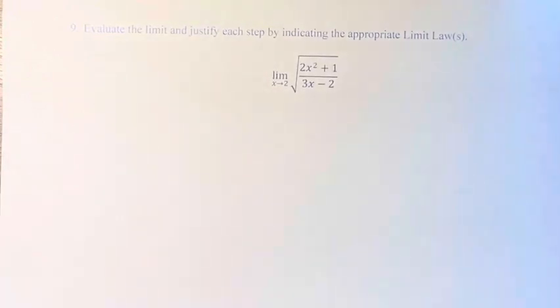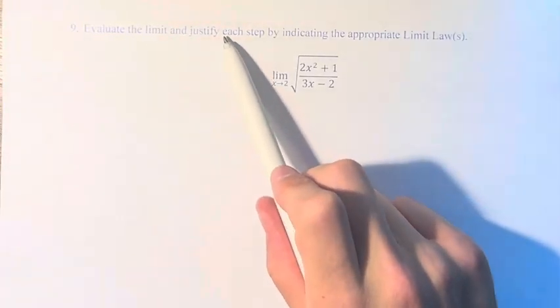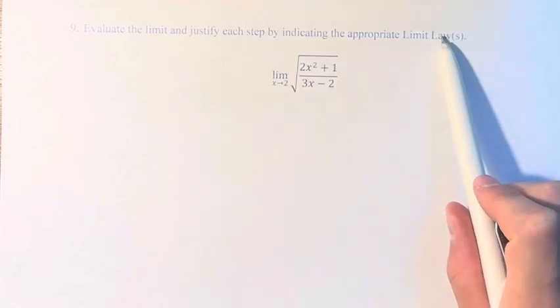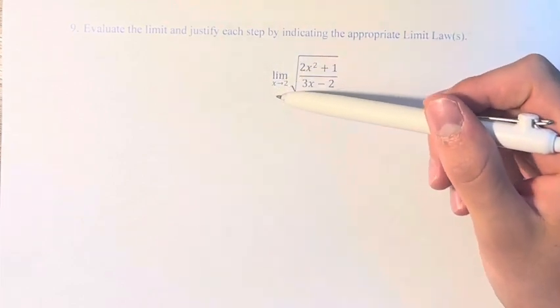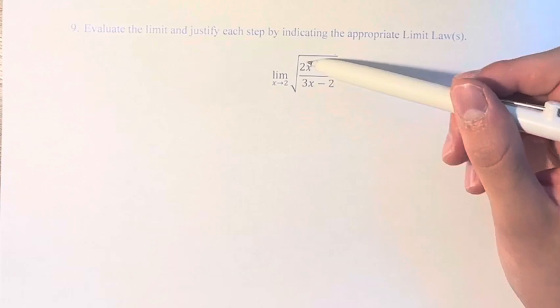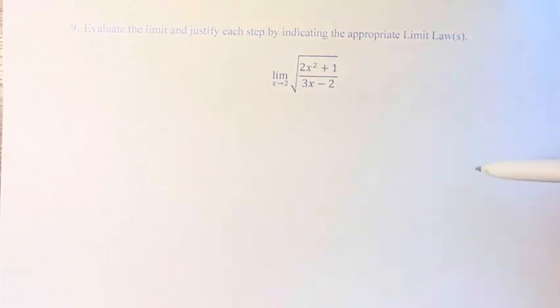Hello and welcome back to another video. In this problem, we're asked to evaluate the limit and justify each step by indicating the appropriate limit laws. So we have the limit as x approaches 2 of the square root of 2x squared plus 1 over 3x minus 2.